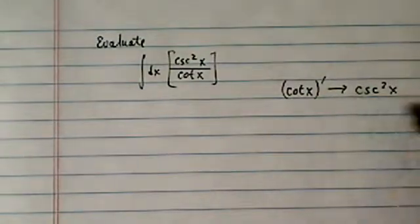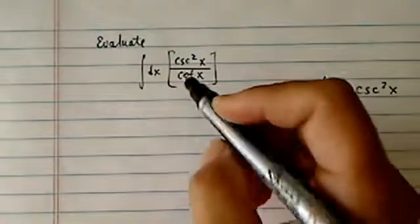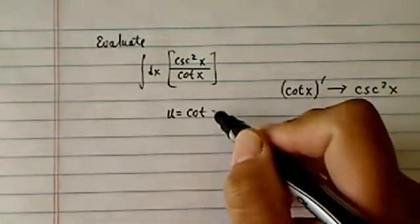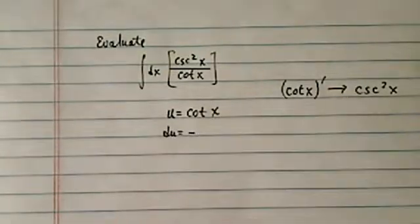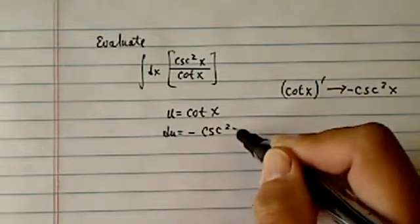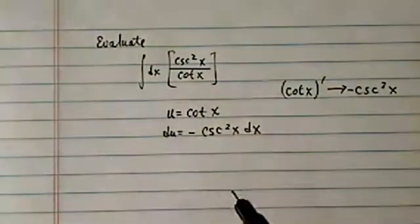This is really a big advantage because when you have a variable exchange, u equal to cotangent of x, then du becomes minus—oh, I missed the minus sign—minus cosecant squared dx.